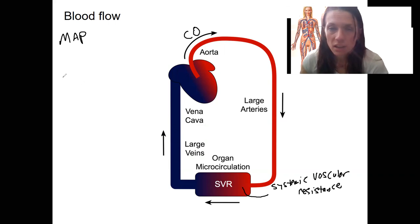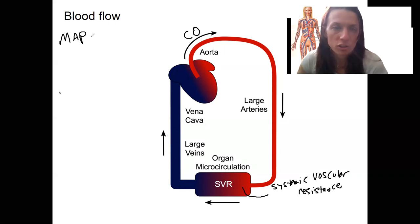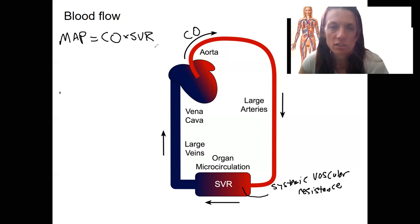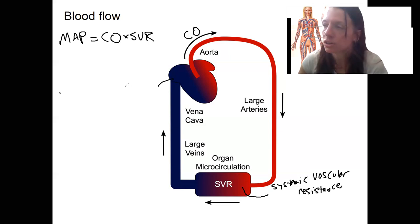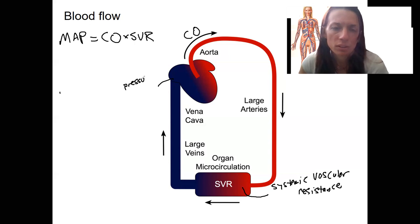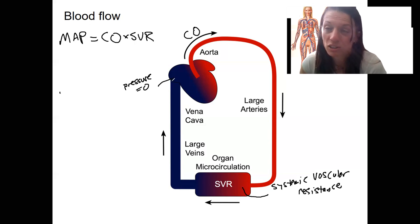The relationship between these: mean arterial pressure equals cardiac output times systemic vascular resistance. We are going to assume that the pressure here — venous pressure — equals zero. It almost always does, which is why we can assume this.